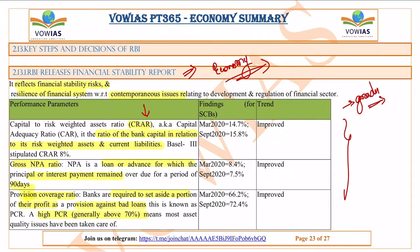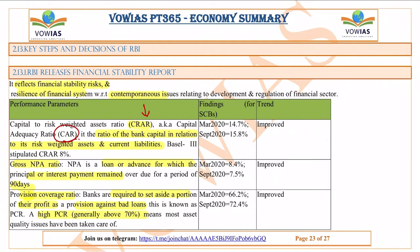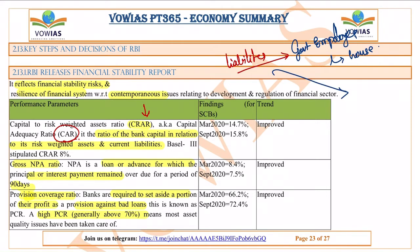This is an important point for UPSC as previous year questions have tested this. The first key term is CRAR — Capital to Risk-weighted Assets Ratio, also known as CAR (Capital Adequacy Ratio). Banks have a lot of liabilities, and some are riskier than others. For example, a loan to a government employee for house construction is different from a loan to a real estate agent — the latter is significantly more risky.